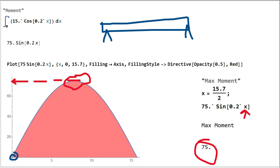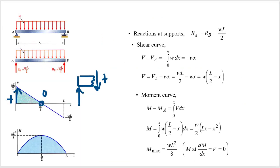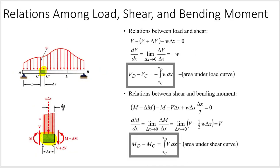So that is shear and bending moment diagrams for beams that have distributed loads on top of them. A little bit of calculus, but the big equations to remember are: the change in shear is the area under your load curve, and the change in moment is the area under your shear curve. These two come from the free body diagram of just a little element of your beam.